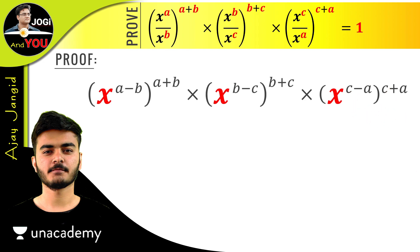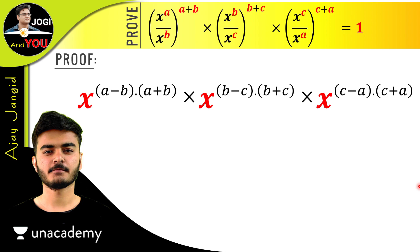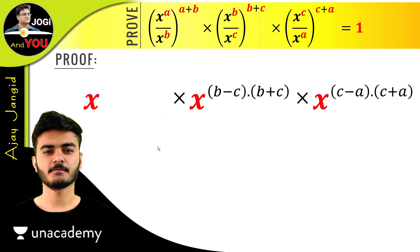So just convert this all like this. Now see this portion in this form: (a-b) × (a+b). This is our algebraic formula which is a² - b². So just convert this to a² - b².